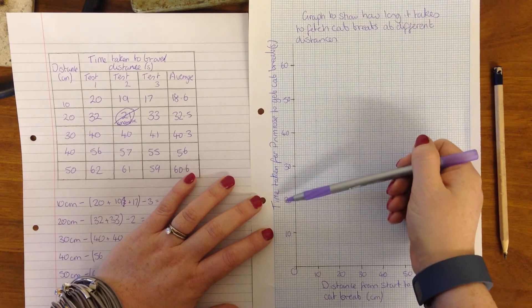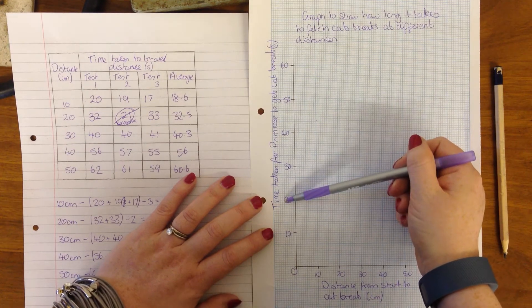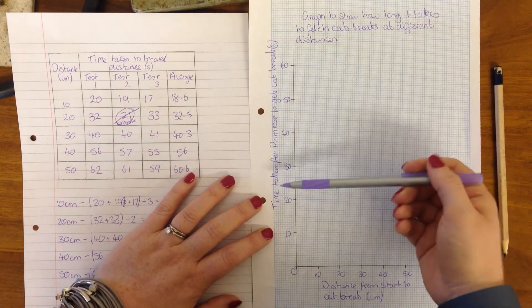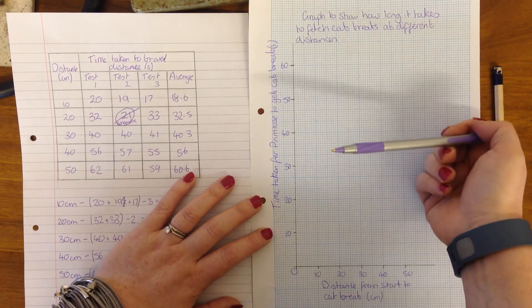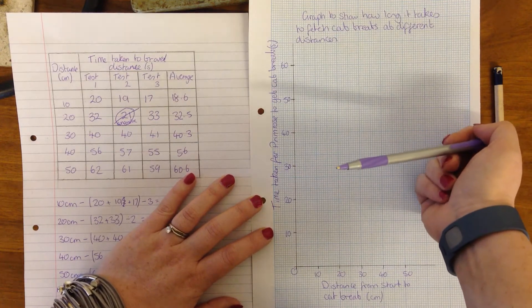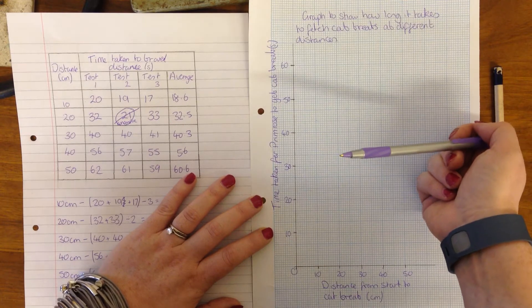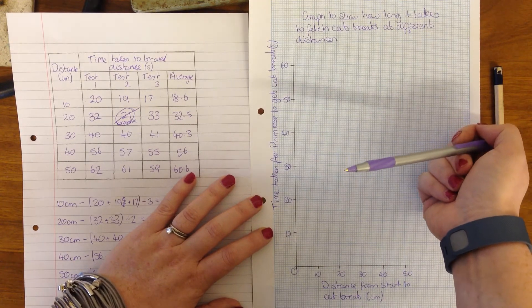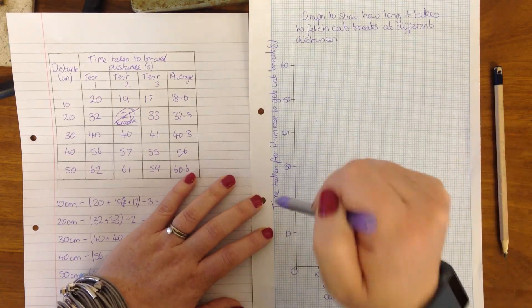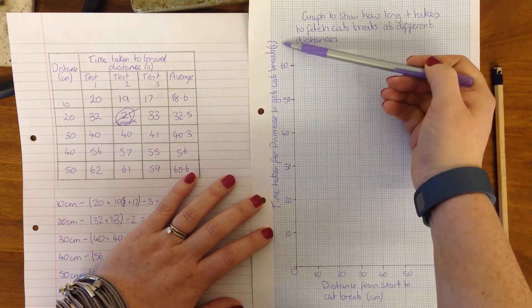Now when you are thinking of titles for your axis, make sure they're really descriptive. Don't just put time up here because that could be time to make a cup of tea, it could be time to walk from my classroom to the staff room. You have to tell me time of what, otherwise I don't know. And you've got to put your units: seconds and centimeters down here.